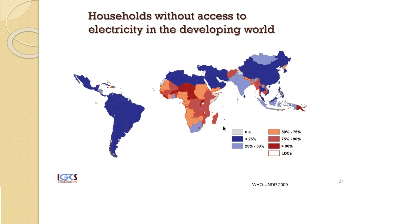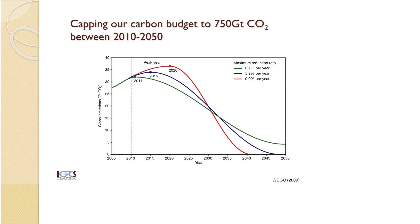Now, renewables — particularly solar photovoltaics — have gotten a lot cheaper and pose a very interesting alternative to dirty fuels that contain a lot of carbon dioxide. Nevertheless, the fact that many countries in sub-Saharan Africa have very little access to electricity poses a very significant challenge for those economies and planners, because they have to find ways to provide access to clean electricity to hundreds of millions of households in a manner that doesn't significantly heighten the growth of carbon dioxide or greenhouse gases.